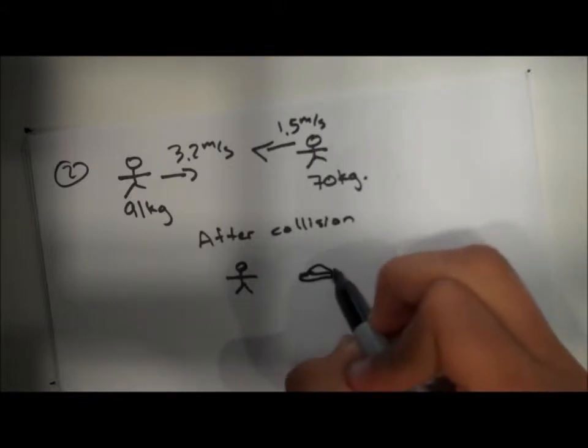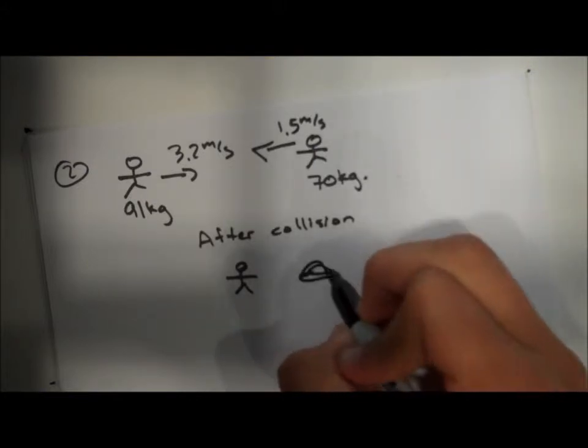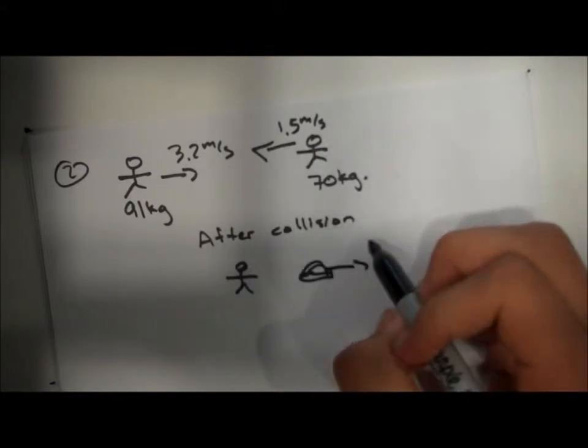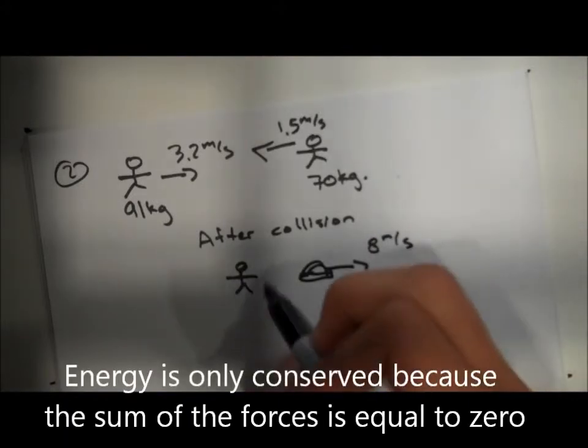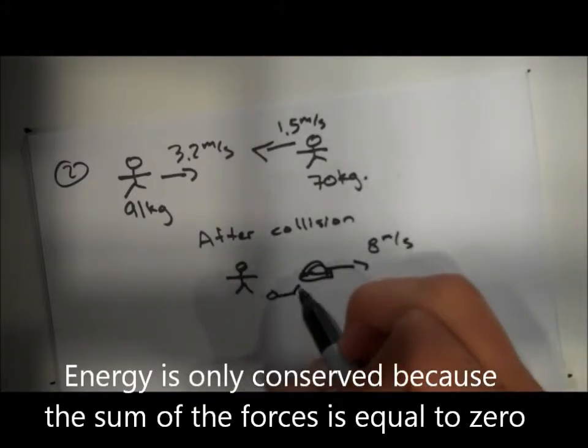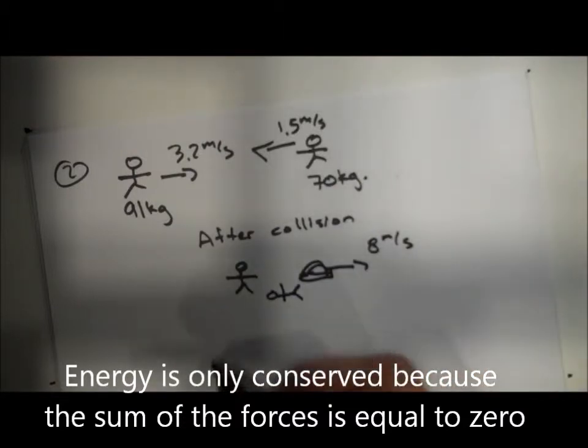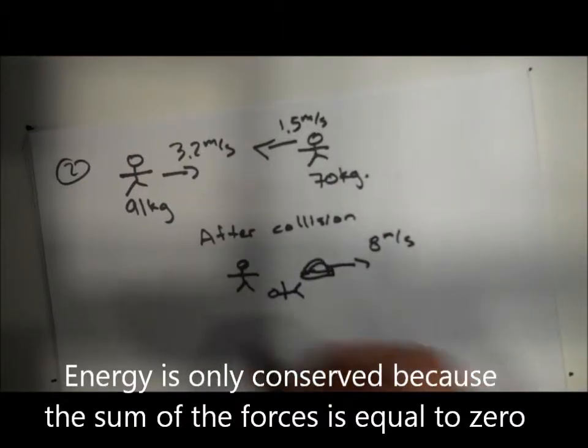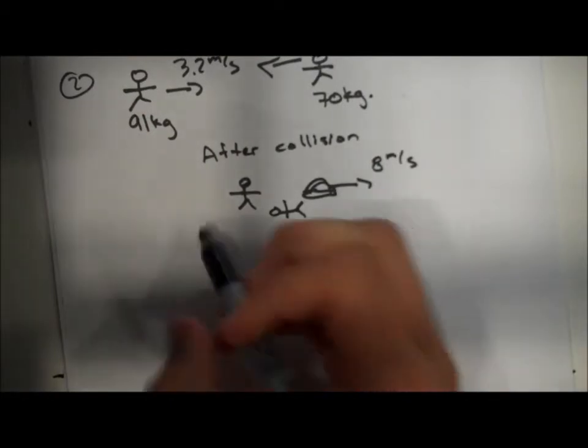Now after the collision what's going to happen is the actual puka is going to fall on the ground whereas his shell is going to move the opposite direction, thus the conservation of energy will be conserved in this collision.